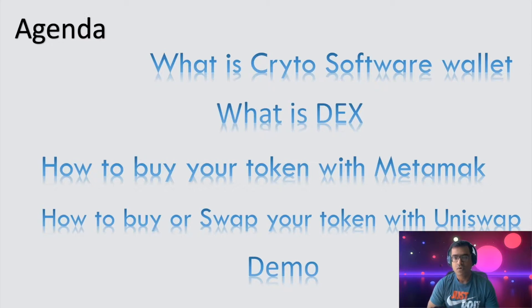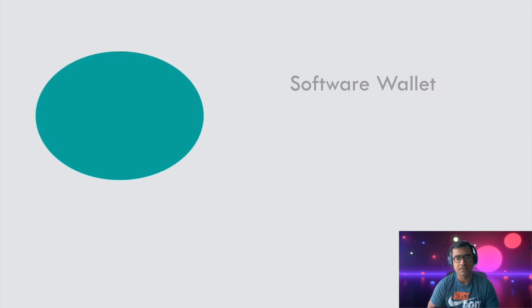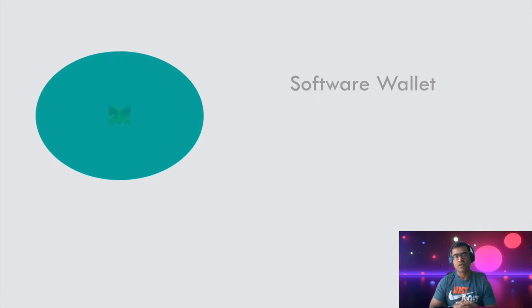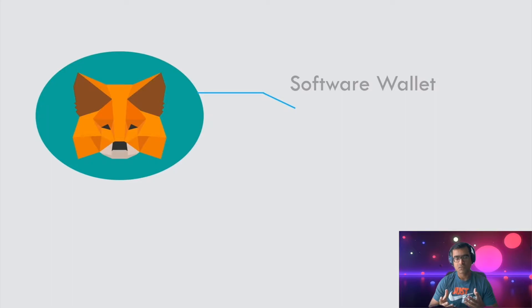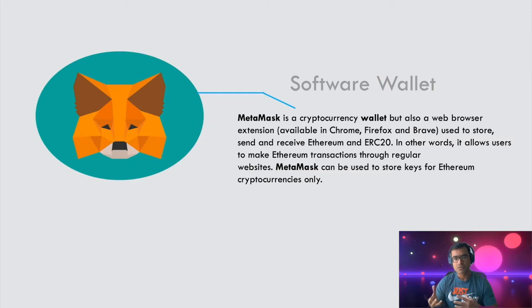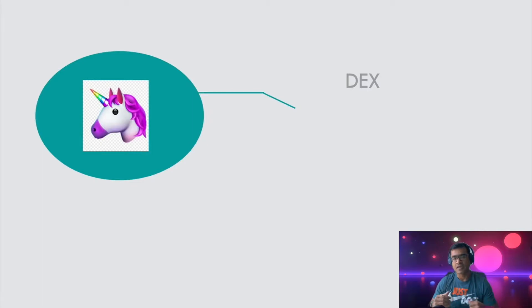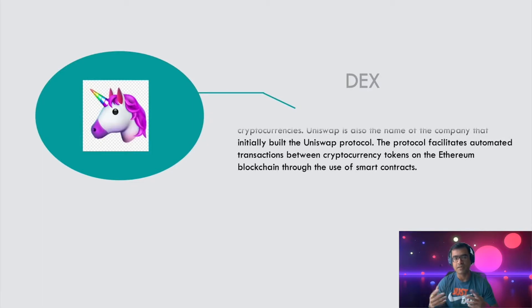Let's understand what is a crypto software wallet. The most popular crypto software wallet is on your iOS or Android phone and it is called MetaMask. MetaMask is also available as a browser extension, but if you want to carry your crypto tokens with you, MetaMask is a very good choice. MetaMask is a cryptocurrency wallet that supports all Ethereum and ERC-20 based tokens.